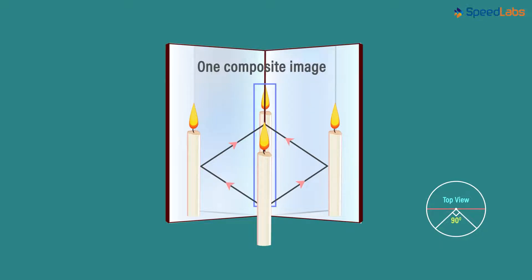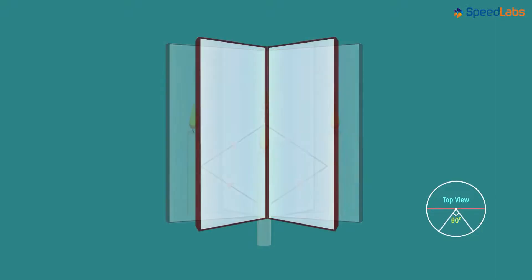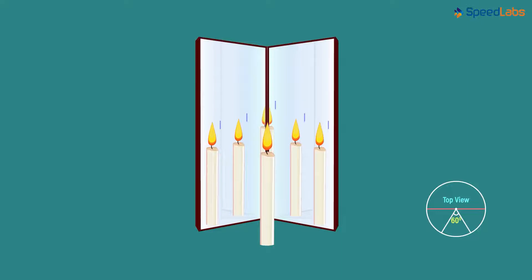In this case, the angle between the mirrors was 90 degrees. Now let's see what happens if I decrease the angle between them. When I reduce the angle between the mirrors to 60 degrees, we see five images. This one is a composite image made up of two partial reflections.